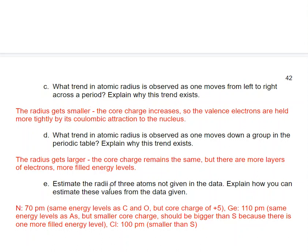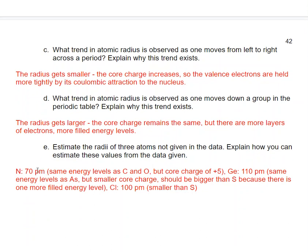We can estimate the radius of atoms not given in the data. For nitrogen, I estimate about 70 pm, because it has the same energy levels as carbon and oxygen, but a core charge between theirs. For germanium, about 110 pm, because it has the same energy levels as arsenic and antimony but a smaller core charge, and is larger than sulfur because it has one more energy level. For chlorine, I'd guess around 100 pm — a little smaller than sulfur.